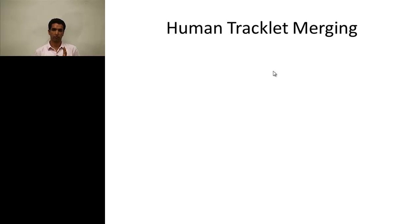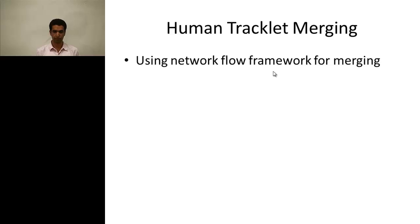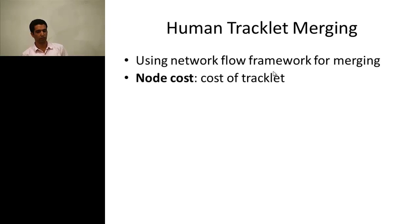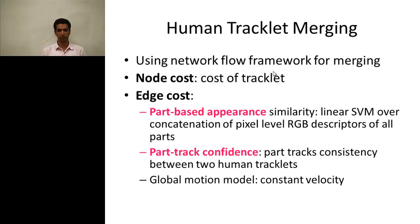We use the information of part tracking not only for splitting but also for merging person tracklets. For human tracklet merging, we use network flow optimization again. The node cost is the cost of the tracklet, and the edge cost is based on three terms: part-based appearance similarity, part track confidence, and a global motion model.